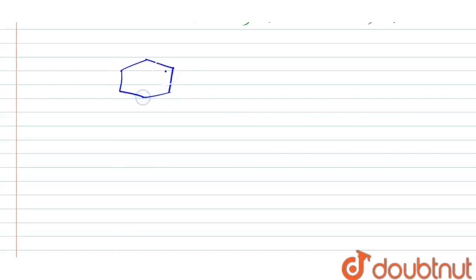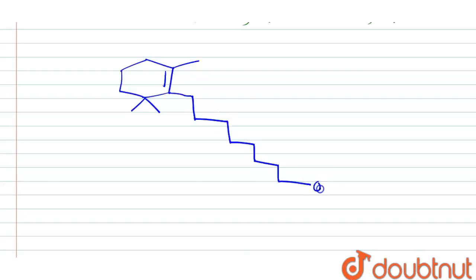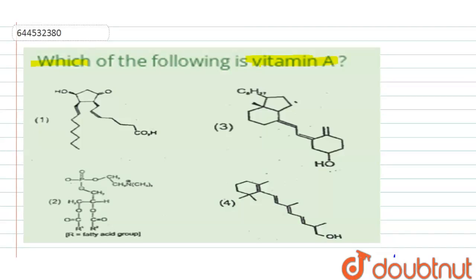The major structure of Vitamin A is like this: a cyclic ring with two methyl groups joined here, one methyl group, and a long hydrocarbon chain. Here it is OH, then one methyl group, then double bonds are present in alternate positions, and here is another methyl group. This is the major structure of retinol, that is the major structure of Vitamin A.